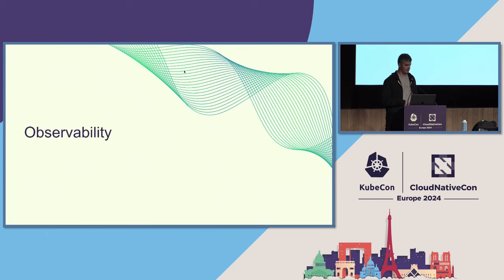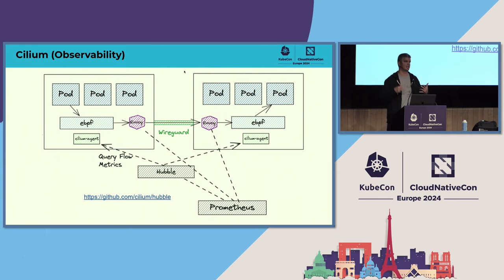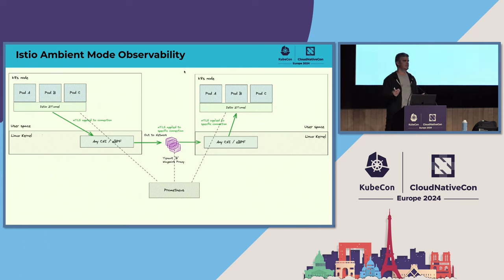Cilium already has a very powerful observability implementation even before service mesh components were added. Layer 3 and Layer 4 metrics collection from the kernel can be shared into a component called Hubble, which has a nice UI for displaying flows between pods. Envoy is used for Layer 7 metrics. All of this can be piped back to Prometheus, Elastic, Datadog, or your existing observability stack. Istio also supports getting metrics into Prometheus from both the Z-Tunnel component and the Layer 7 waypoint proxies.